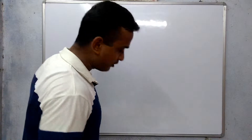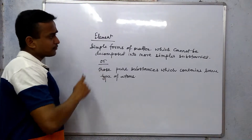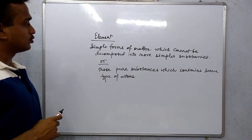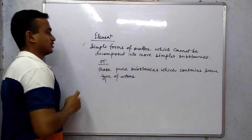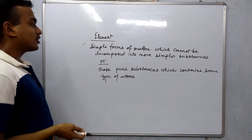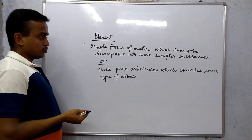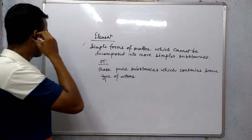So let's start with element. What is element? Here I have two definitions. First we will understand, and then we will understand. The first definition: a simple form of matter which cannot be decomposed into a more simple substance.